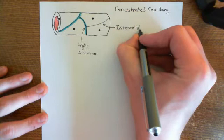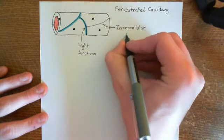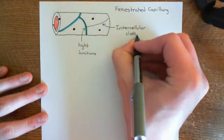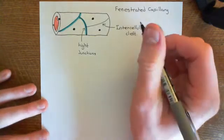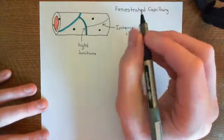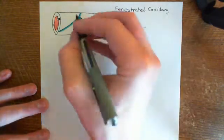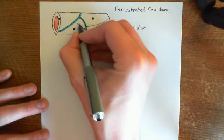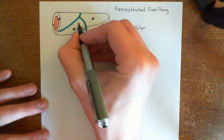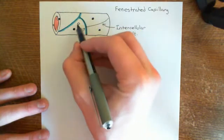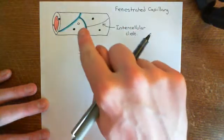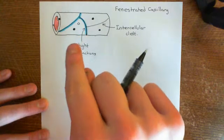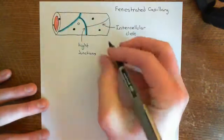So what's the difference between these fenestrated capillaries and the continuous capillaries? Because everything so far is exactly the same. Well, basically, in these little cells what you have is little holes in the cells. So if you imagine taking this endothelial cell and sticking your finger into the side of it and producing an invagination.